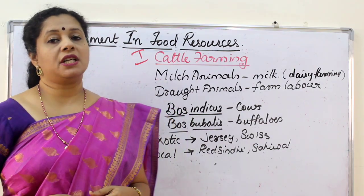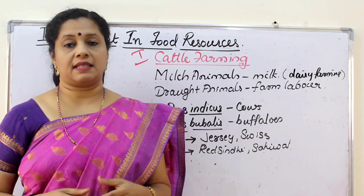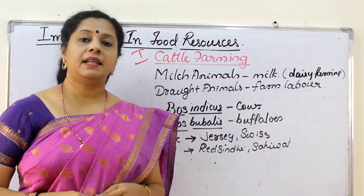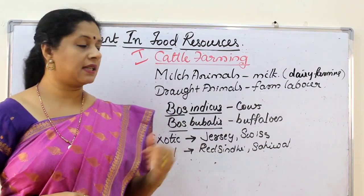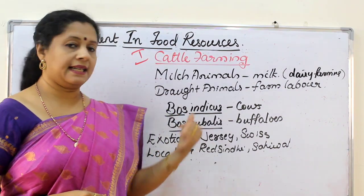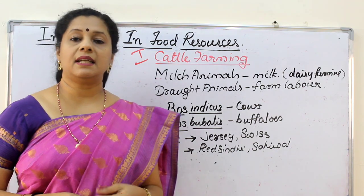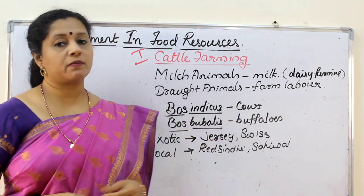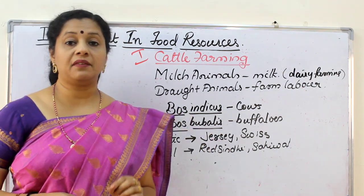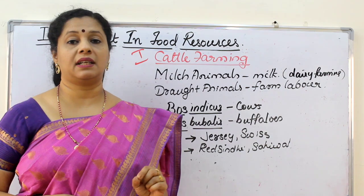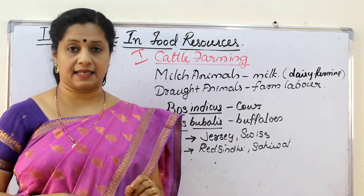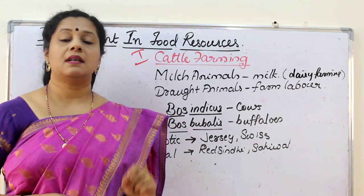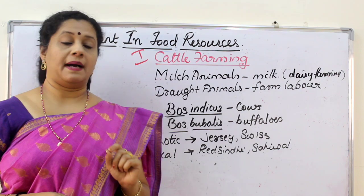Indian species of cattle belong to two species. Indian cows fall under the species Bos indicus, whereas Indian buffaloes come under the category Bos bubalis. So the scientific name of the Indian cow is Bos indicus and the scientific name of Indian buffalo is Bos bubalis.